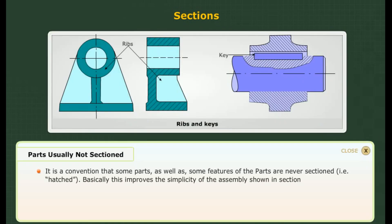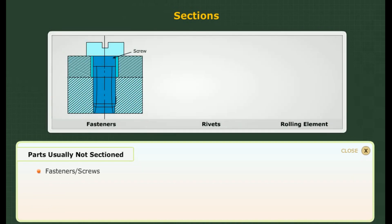Parts usually not sectioned: By convention, some parts as well as some features of parts are never sectioned, that is, never hatched. This improves the simplicity of the assembly shown in section. Ribs — a casting of a pedestal type bearing journal with rib is shown; the rib is not sectioned. Keys — a parallel key used in a shaft for fixing a pulley is shown; the key is not sectioned.